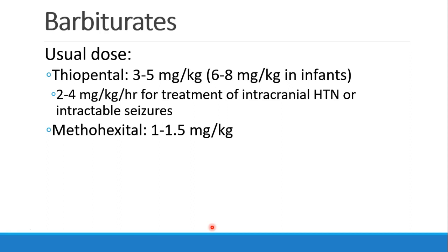The usual dose of thiopental is 3 to 5 mg per kg, which is about double the dose of propofol. In infants, I would double it again to about 6 to 8 mg per kg. The drug can also be used for treatment of intracranial hypertension or intractable seizures at an infusion rate of 2 to 4 mg per kg per hour. Methohexital is more potent and can be used at lower doses of 1 to 1.5 mg per kg IV.